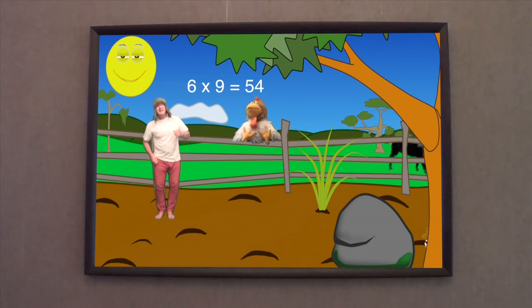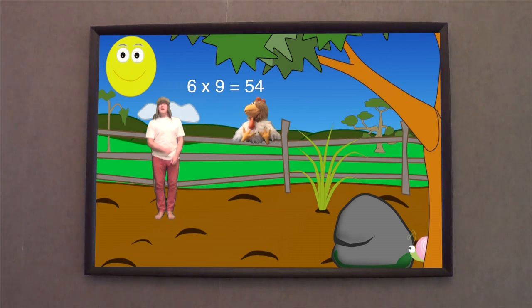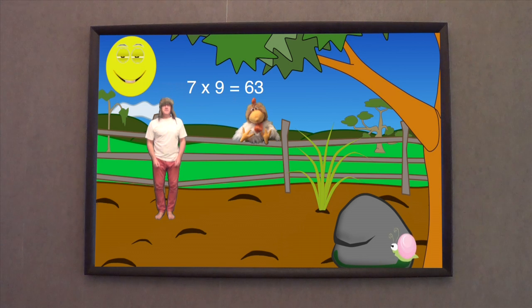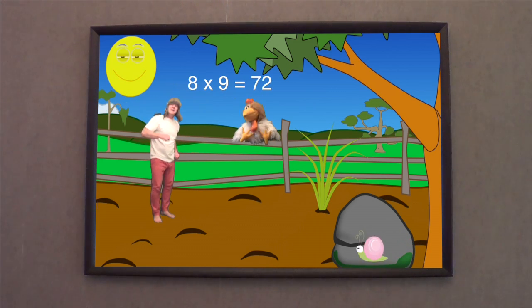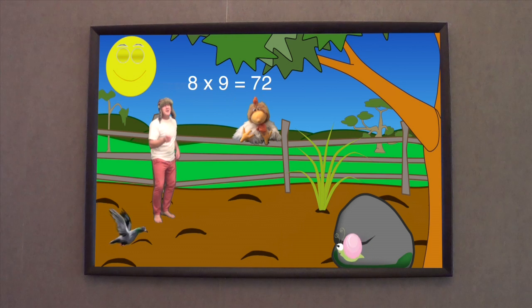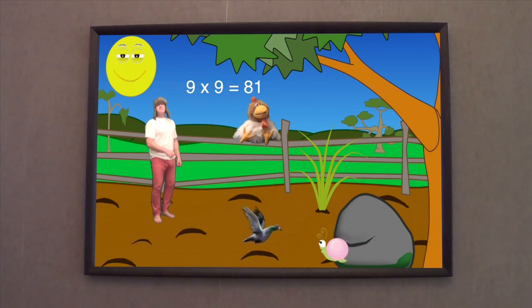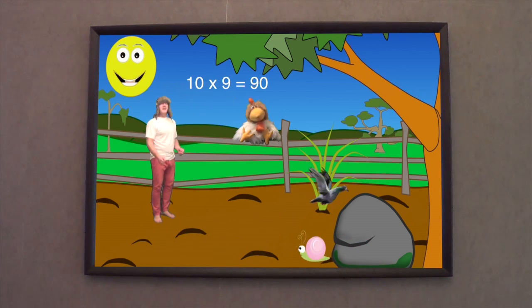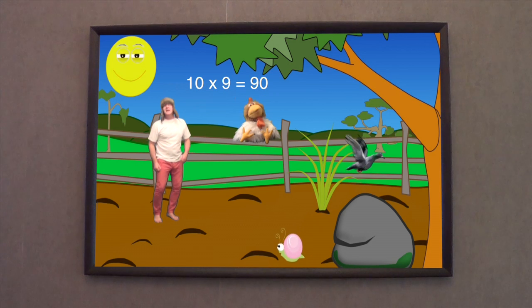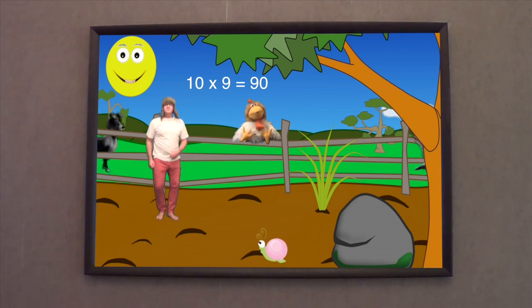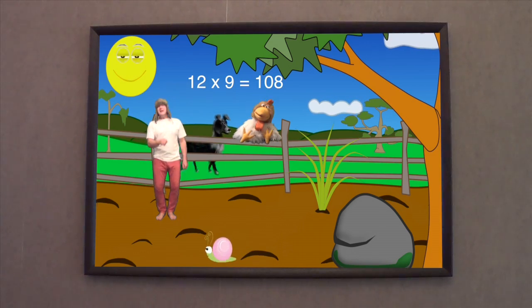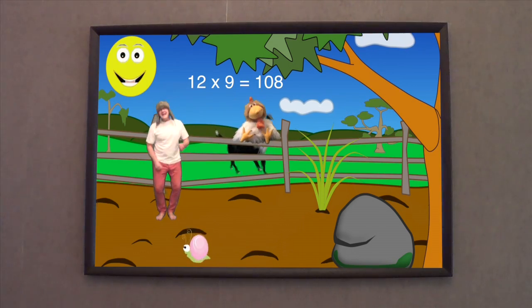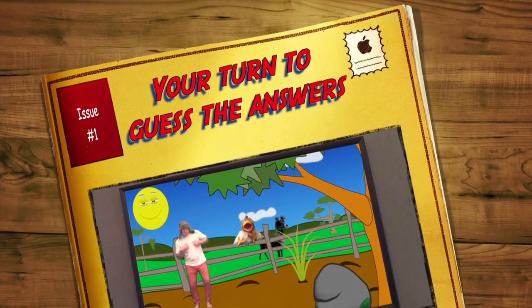And six times nine is fifty-four, seven times nine is sixty-three, eight times nine is seventy-two, nine times nine is eighty-one, and ten times nine is ninety, eleven times nine is ninety-nine, and twelve times nine is a hundred and eight.